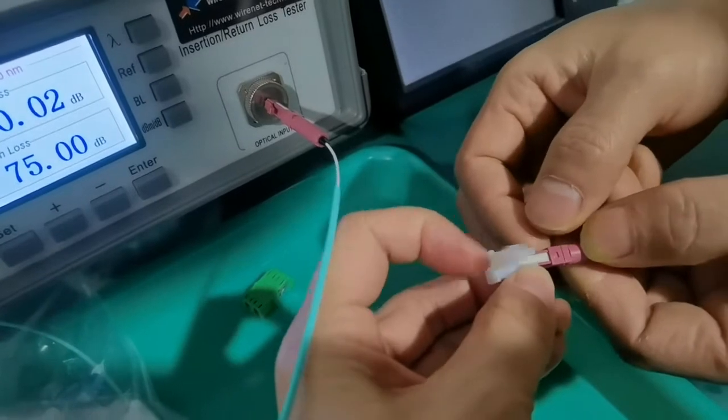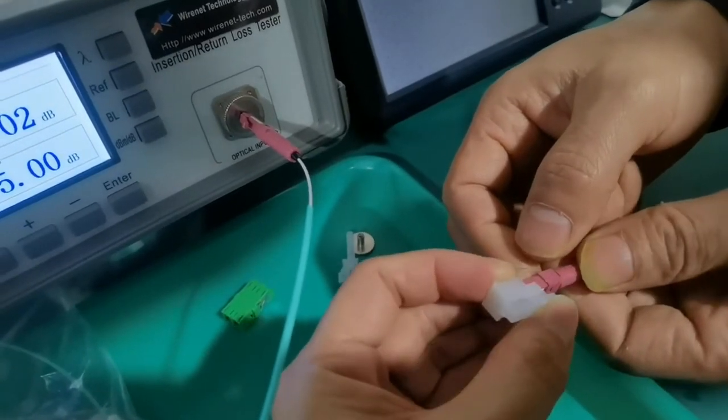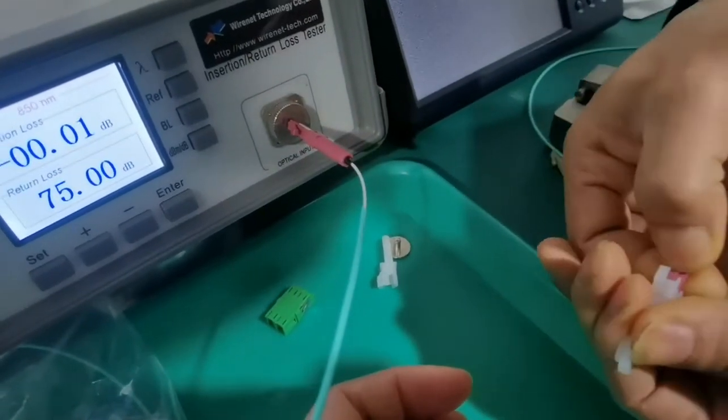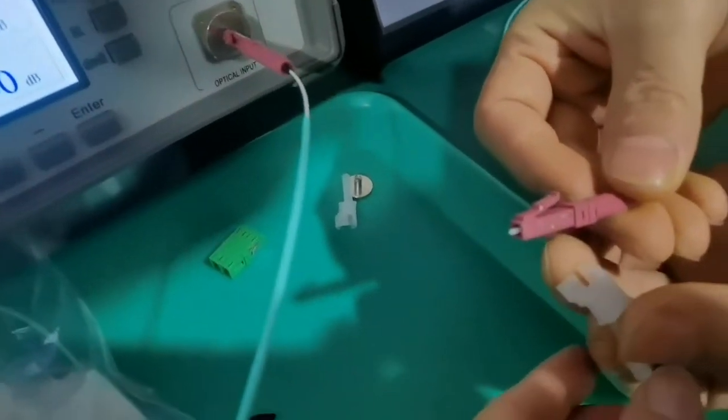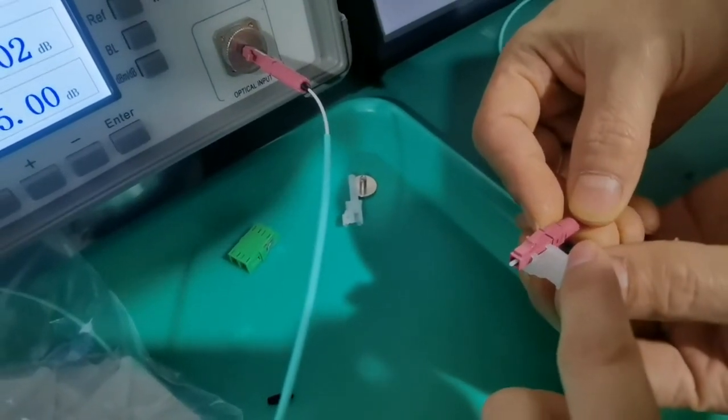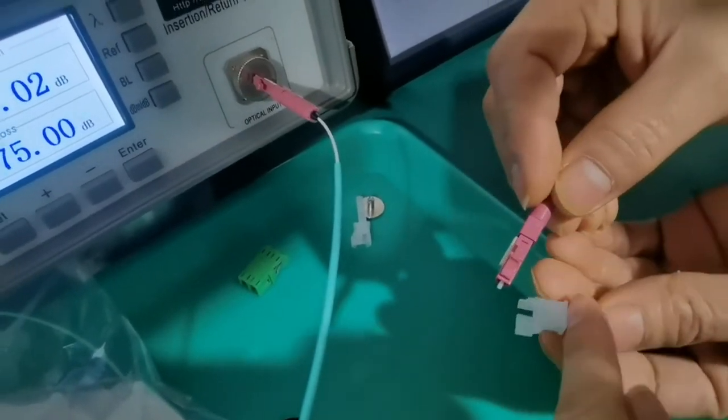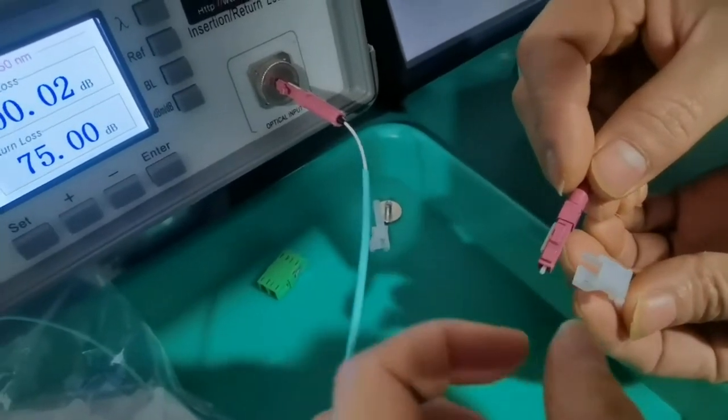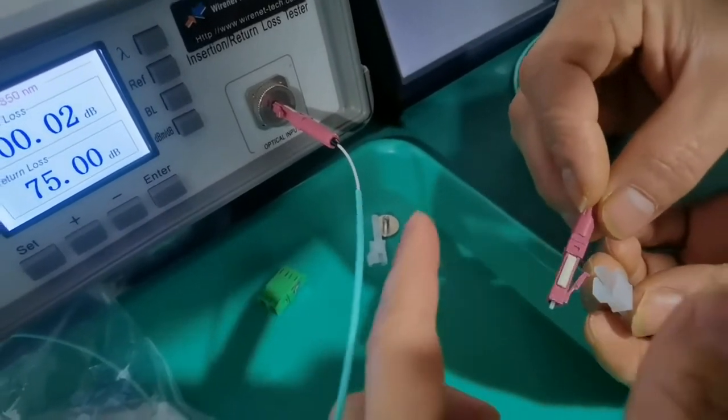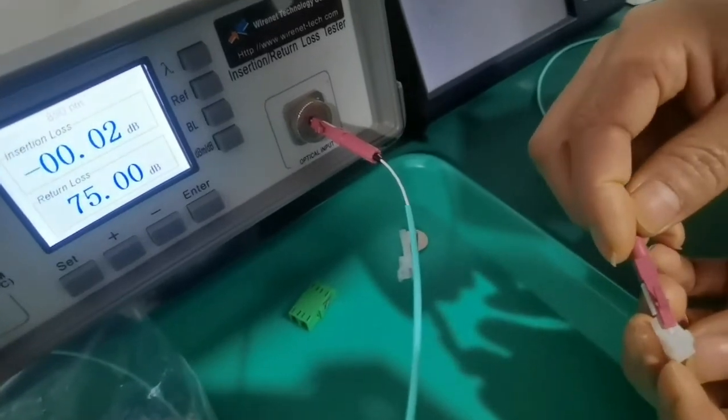This part can fix the fiber to make it tight. After you have assembled the FASTA connector with the cable, if you want to reuse it, use this tool to make the groove open to loosen the fiber. Then you can pull out the fiber and reuse it again.